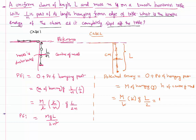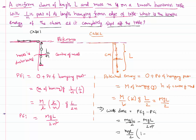The work done equals the change in potential energy: PE final minus PE initial equals MGL by 2 minus MGL by 2N squared. Taking MGL by 2 as common, the work done is MGL by 2 times (1 minus 1 by N squared). That is the answer. Thank you for watching — keep coming back for more lessons.